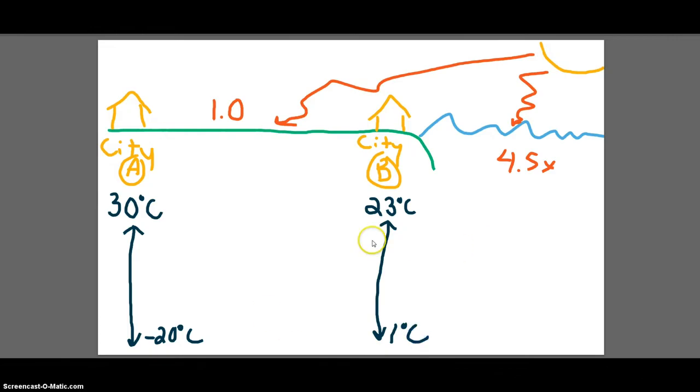Now, this shows varying temperature ranges then. So in your inland city, you have a temperature range of 50 degrees Celsius, which is a huge range. And then your coastal city only has a temperature range of about 22 degrees Celsius.